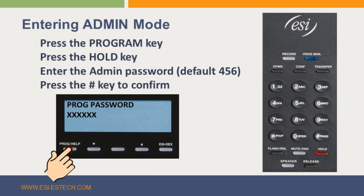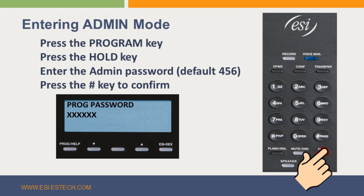First, on any ESI phone within the system, press the program/help key. Note, on some phones there is a separate program and help key, so press the program button. The normal station programming menu prompt will begin to play. Next, you will stop the prompt by pressing the hold button.